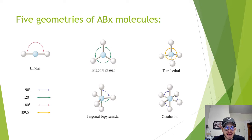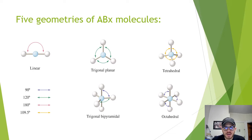This slide illustrates the five geometries of ABX molecules. In an ABX molecule, the bond angle is the angle between two adjacent A and B bonds. The AB2 molecule has only two bonds and is therefore linear, with a bond angle of 180 degrees. AB3 has three bonds and a bond angle of 120 degrees. AB4 has four bonds and a bond angle of 109.5 degrees. AB5 is trigonal bipyramidal, with 120-degree and 90-degree bond angles. AB6 is octahedral and has a 90-degree bond angle.